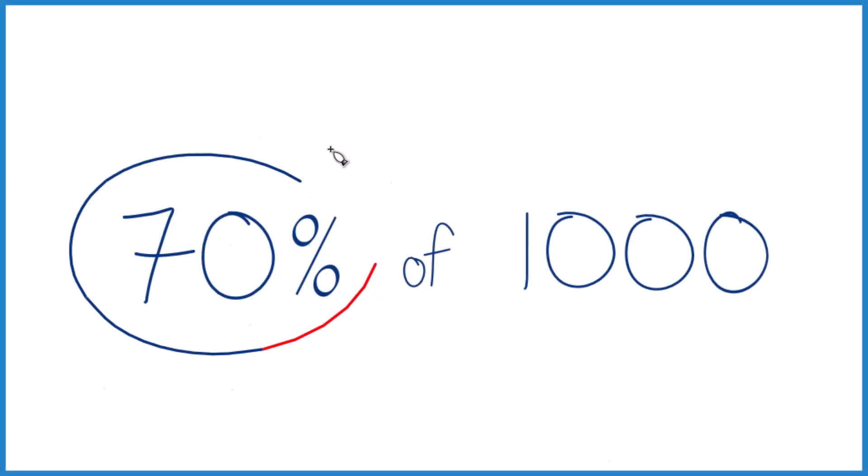If you need to find 70% of 1,000, here's how you do it. I like to think of it this way.